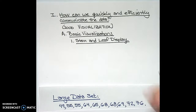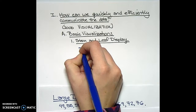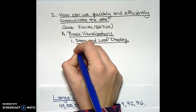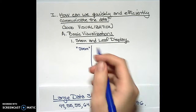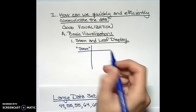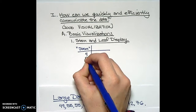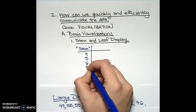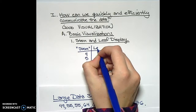We'll start by creating a stem and leaf display of this data. The way a stem and leaf display works is we'll create the stem, which for this situation will be the tens digits of all our different data points. So we have values in the 40s, 50s, 60s, and 70s — those will be the four stems. And then to the right, we'll list all of the different leaves.